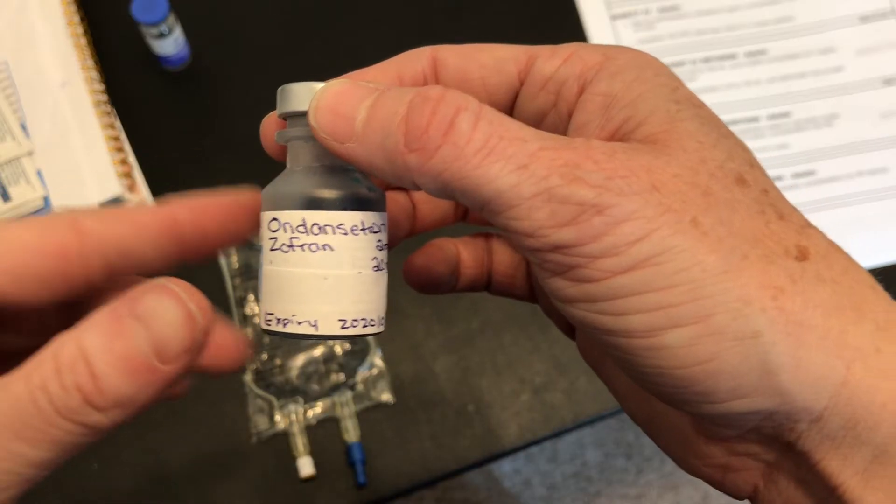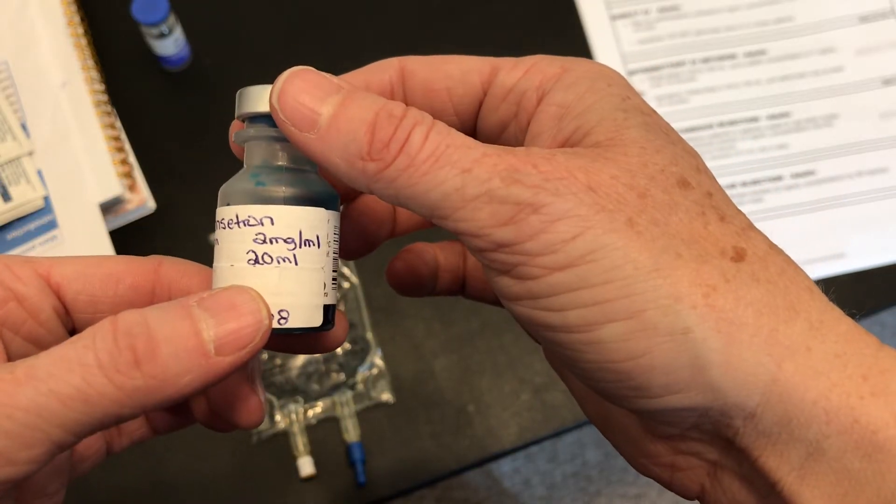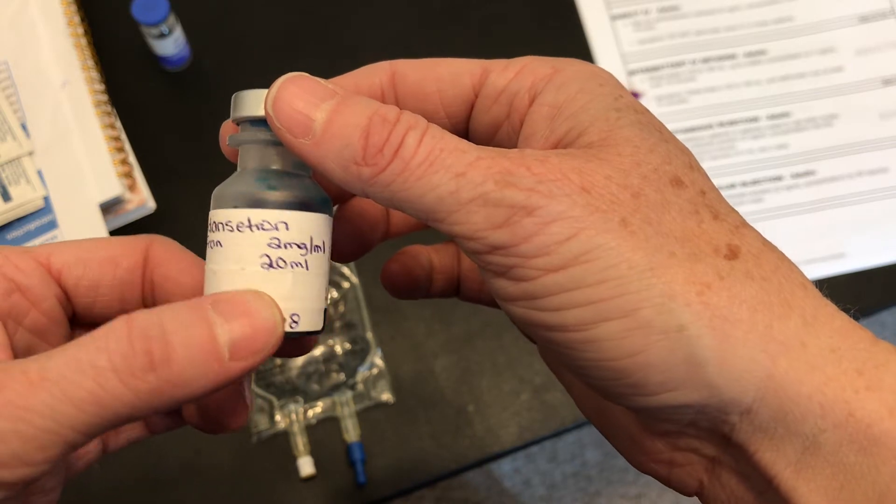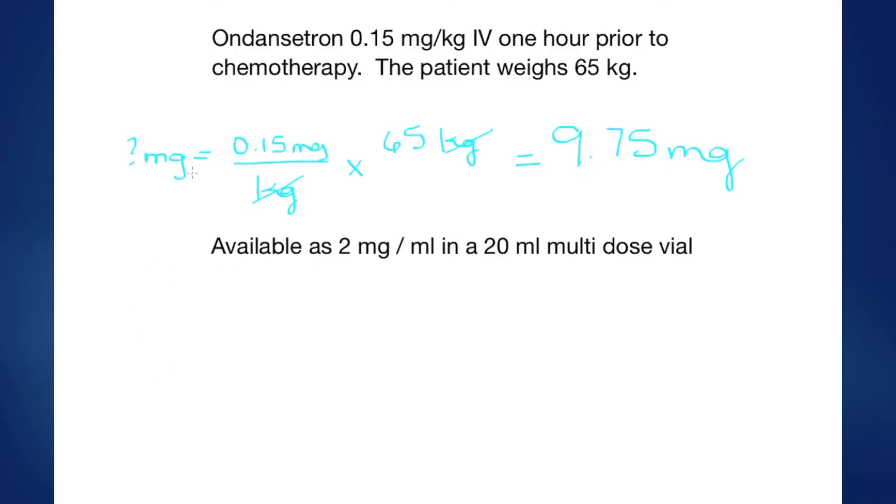Looking at the medication and how it's available, I see that it comes in a 20 ml multi-dose vial at 2 milligrams per ml. So I need to continue on with my math now to determine how many mls do I need to draw up.